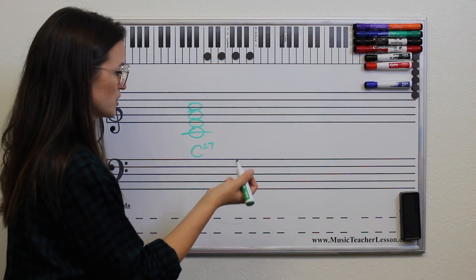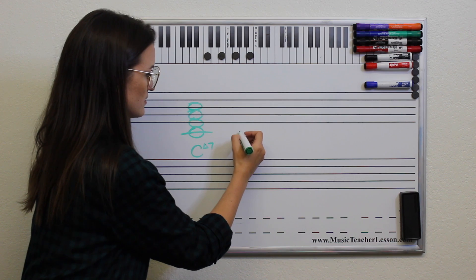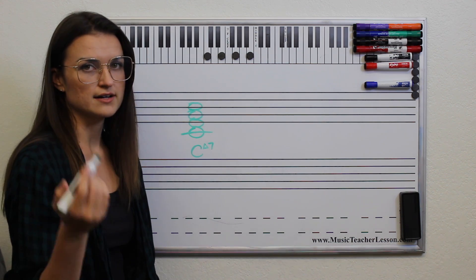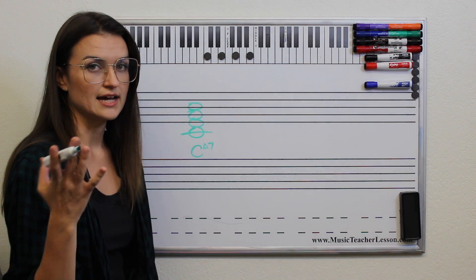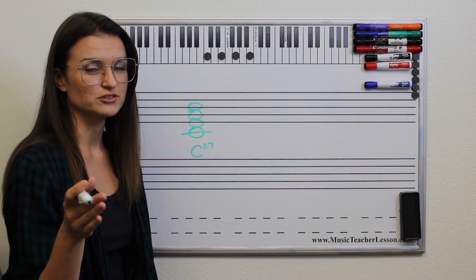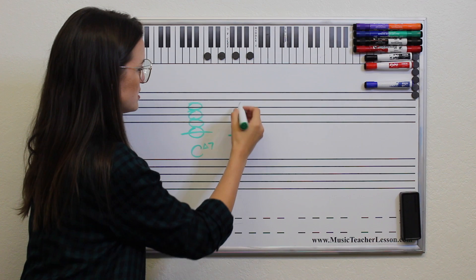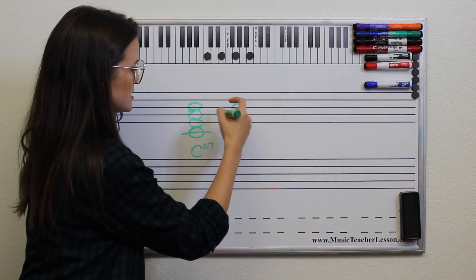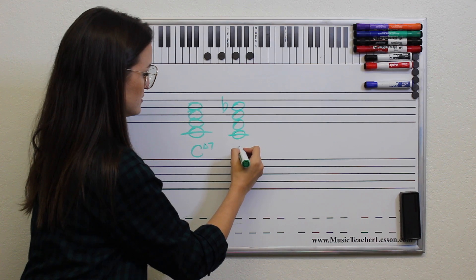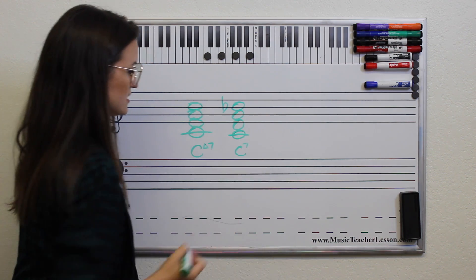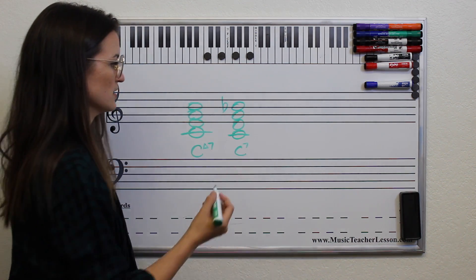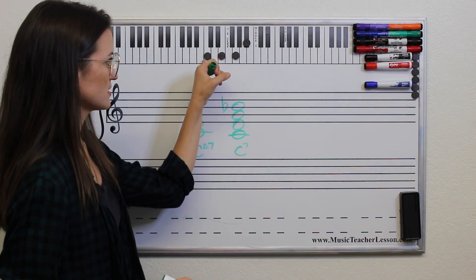So now we're going to go to a dominant 7th. So dominant means we have a major triad and add a flat 7th onto it. So we do C major, which is C, E, G. We add the 7th and we put a flat on it. So this is regular C7. So C7 looks like this.